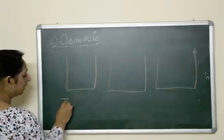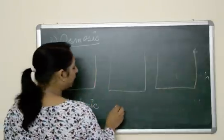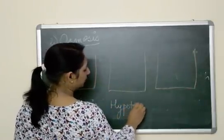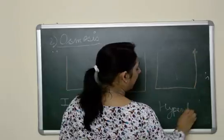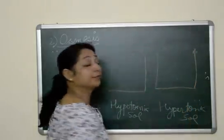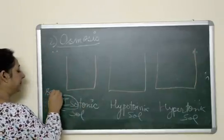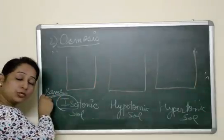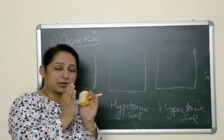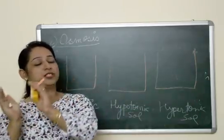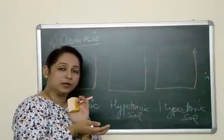Now suppose we take three beakers. In one beaker we keep an isotonic solution, in the second a hypotonic solution, and in the third a hypertonic solution, and we place a cell in each. Iso means same. An isotonic solution is a solution which has the same concentration as the concentration of the cell. Since the concentration inside the cell and outside in the solution are the same, there will be no movement of water.